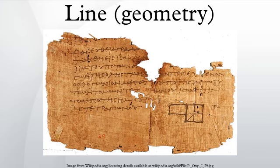Euclid described a line as breadthless length, and introduced several postulates as basic unprovable properties from which he constructed the geometry, which is now called Euclidean geometry, to avoid confusion with other geometries which have been introduced since the end of the nineteenth century. In modern mathematics, given the multitude of geometries, the concept of a line is closely tied to the way the geometry is described.